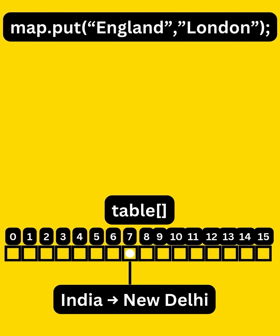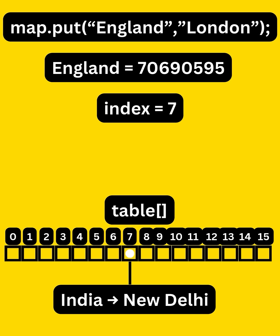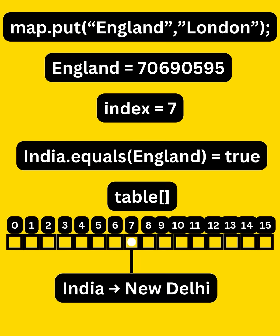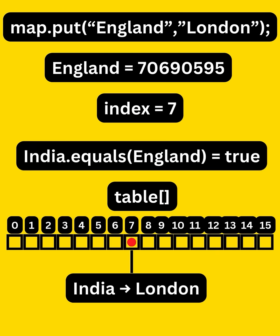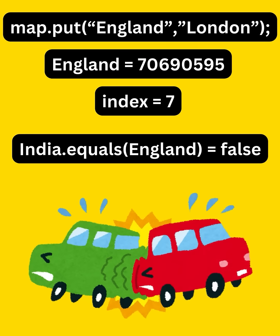Now let's say we add another element as map.put England, London, and somehow the hash value of England comes to be the same as India. This means that their index value is also going to be the same. So Java will use the equals method to compare the two keys — and let's assume the answer is true — so it will replace the value for the key and update the entry in the bucket as India, London. But we all know that is not true, and hence this will result in a hash collision.